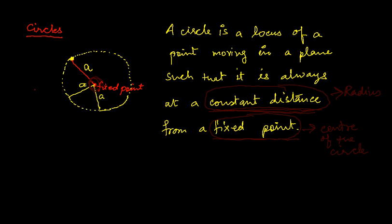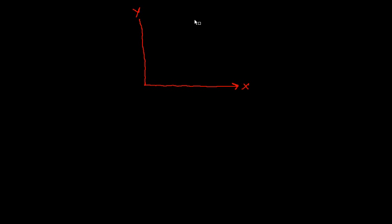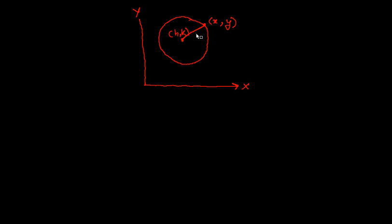Next, I would like to know the equation of the circle — the equation which is satisfied by the circle. Suppose these are my coordinate axes: rectangular axes, this is the x-axis, this is the y-axis. Here is the fixed point (h, k) which is the center of the circle, and here is any point on the circle (x, y). This distance is always constant; let us call that constant a, so a is the radius of the circle.